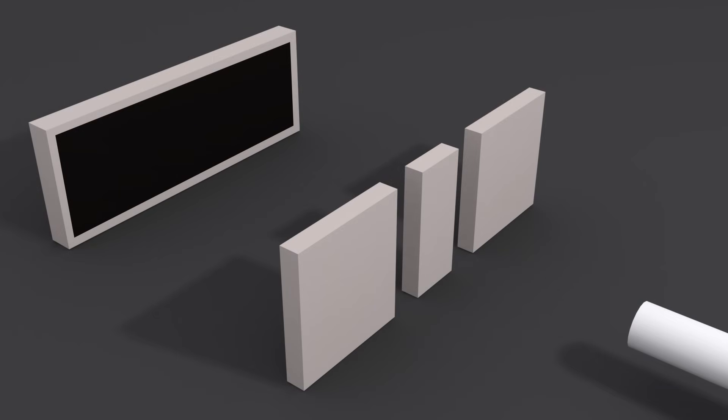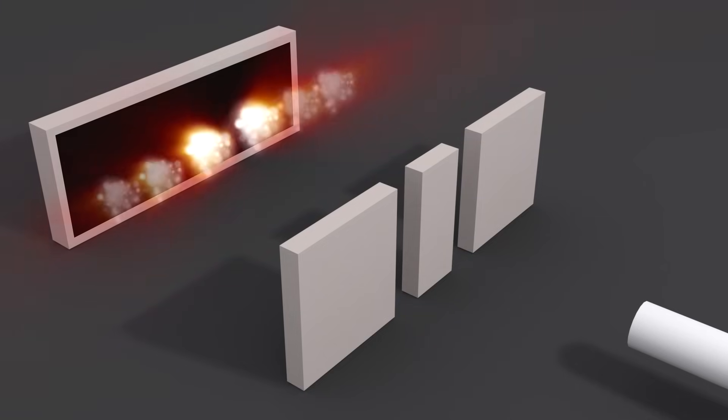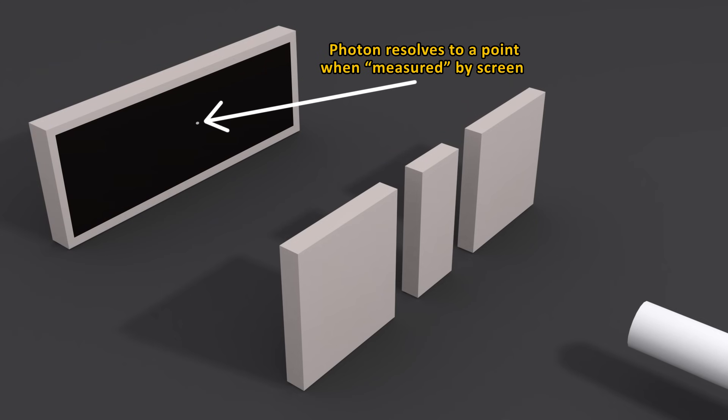A single photon passing through the slit should not be thought of as a particle going through and interacting with itself. Rather, it's like a three-dimensional wave or cloud of probability when it is emitted. This wave can go through both slits at once and interfere with itself like a wave does before it is measured by the photosensitive screen in the back, when it resolves to a specific location on the screen.